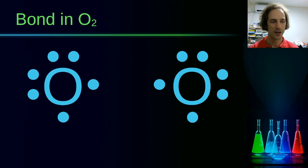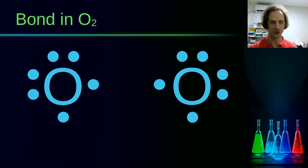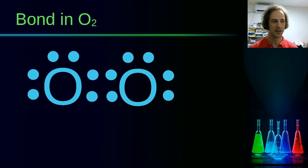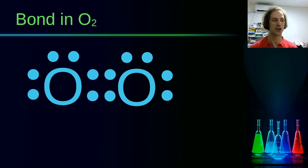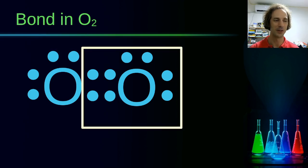Oxygen has two electrons missing to have an octet structure, which is depicted in the Lewis symbol by having two unpaired electrons, with the remaining four electrons in two pairs. We can pair up these lonely electrons with lonely electrons from another oxygen atom, resulting in four electrons shared between the two oxygen atoms, giving each oxygen atom eight electrons.